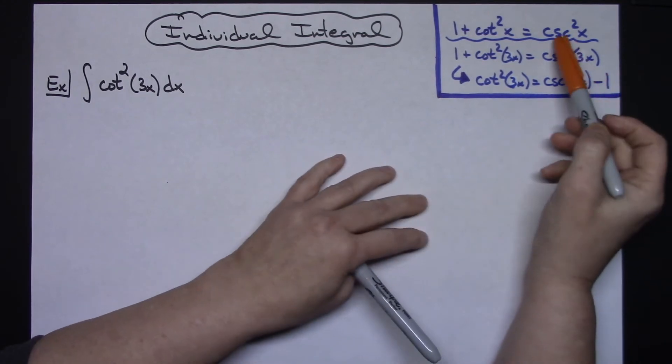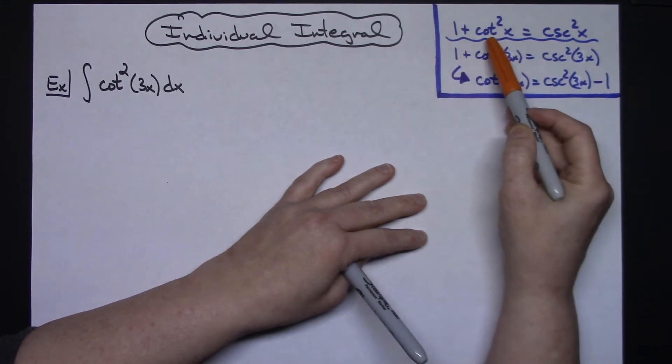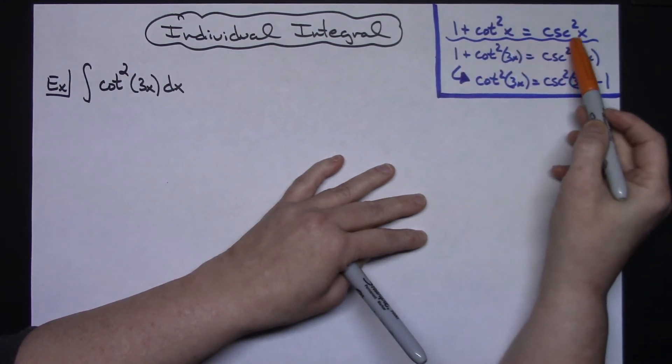Now before we start, I'm going to draw your attention to this Pythagorean identity. This is a Pythagorean identity that you should have memorized: 1 plus cotangent squared x equals cosecant squared x.